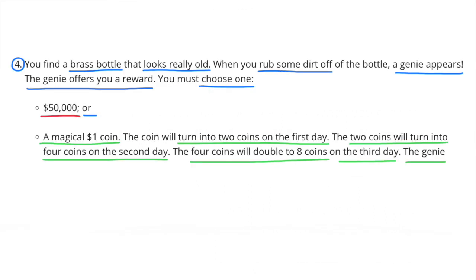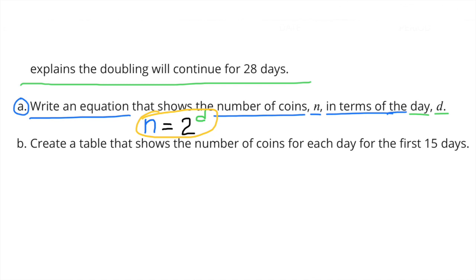Number 4. You find a brass bottle that looks really old. When you rub some of the dirt off the bottle, a genie appears. The genie offers you a reward. You must choose one. $50,000 or a magical dollar coin. The coin will turn into 2 coins on the first day. The 2 coins will turn into 4 coins on the second day. The 4 coins will double to 8 coins on the third day. The genie explains the doubling will continue for 28 days. A. Write an equation that shows the number of coins, N, in terms of the day, D.